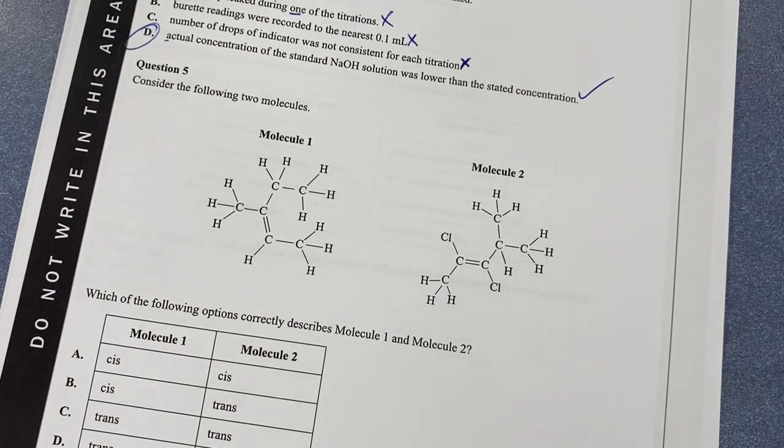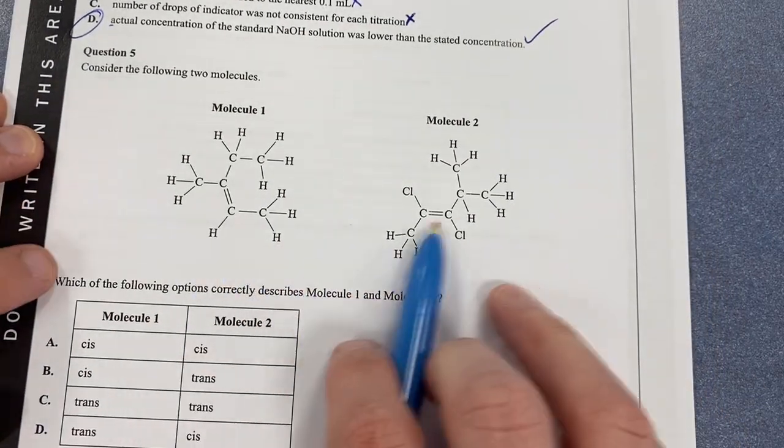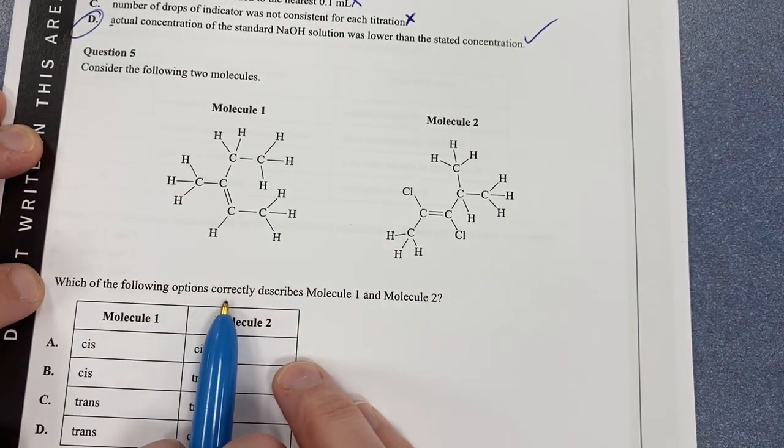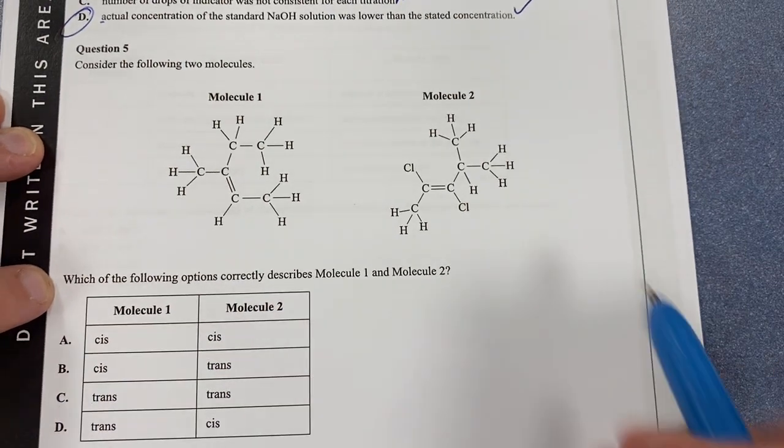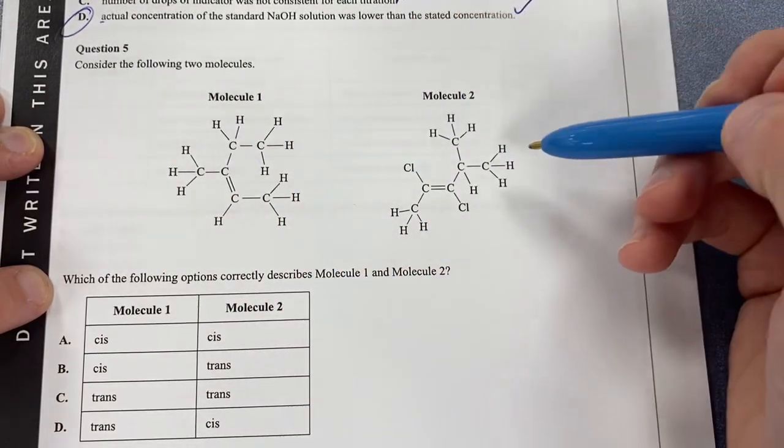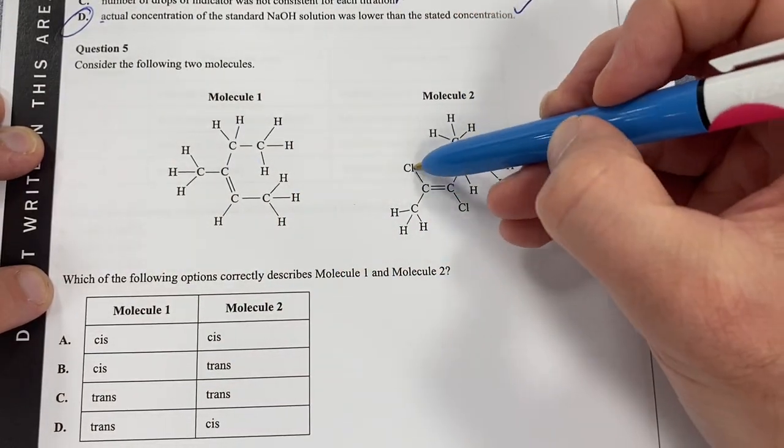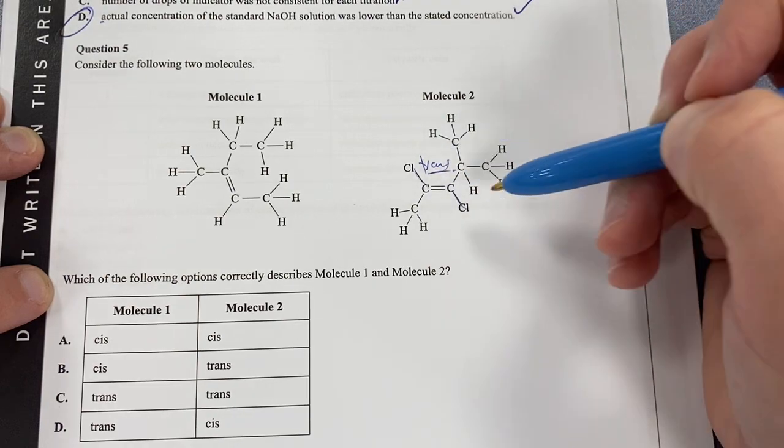Then we're going to move on to question five, which shows two molecules here. Which of the following options most correctly describes molecule 1 and molecule 2? It's looking at cis and trans. Okay, so what we've got here is molecule 2. You can see here, this is going to be trans, which is fine.